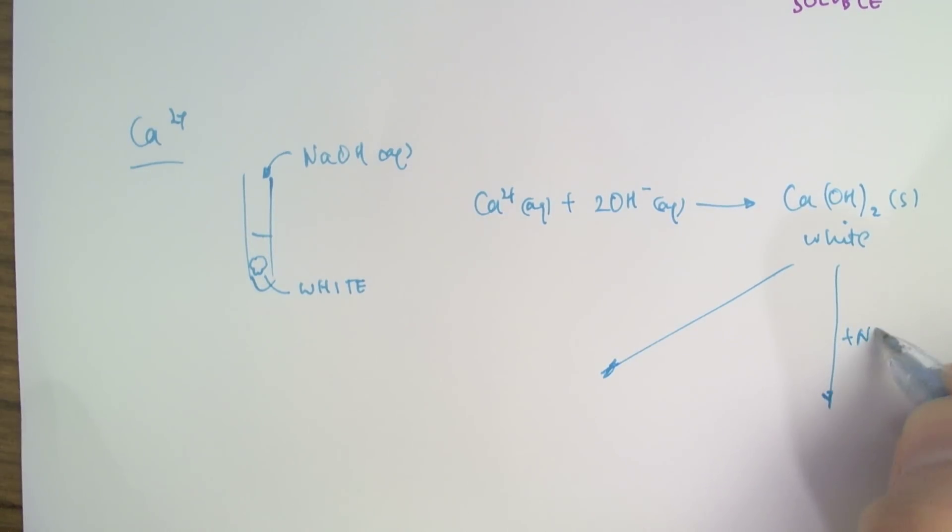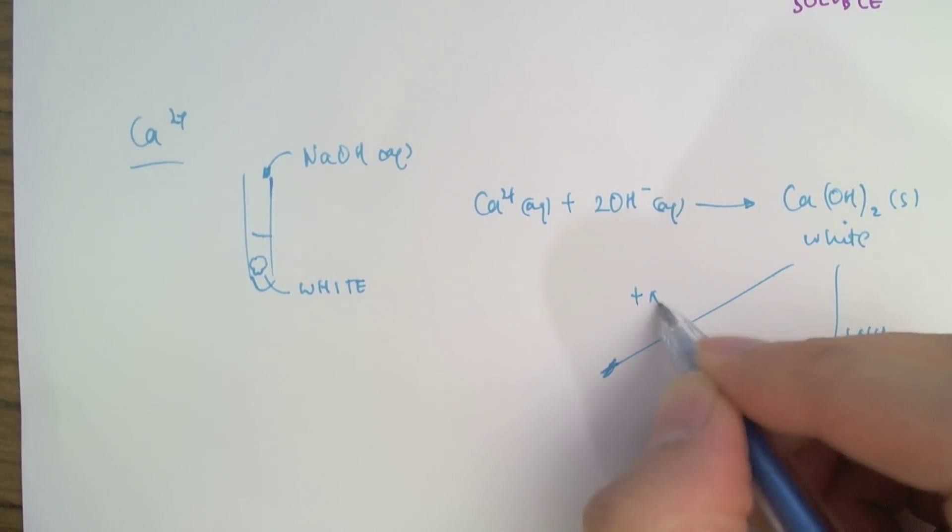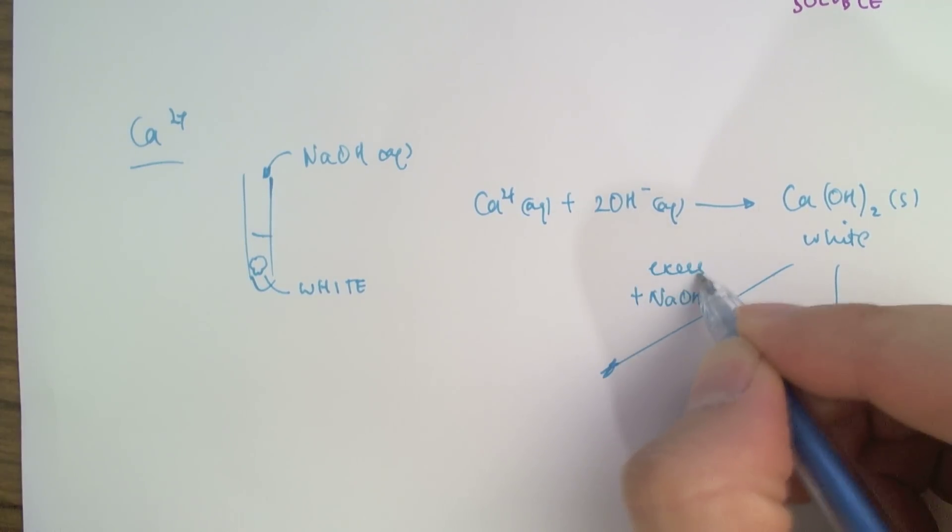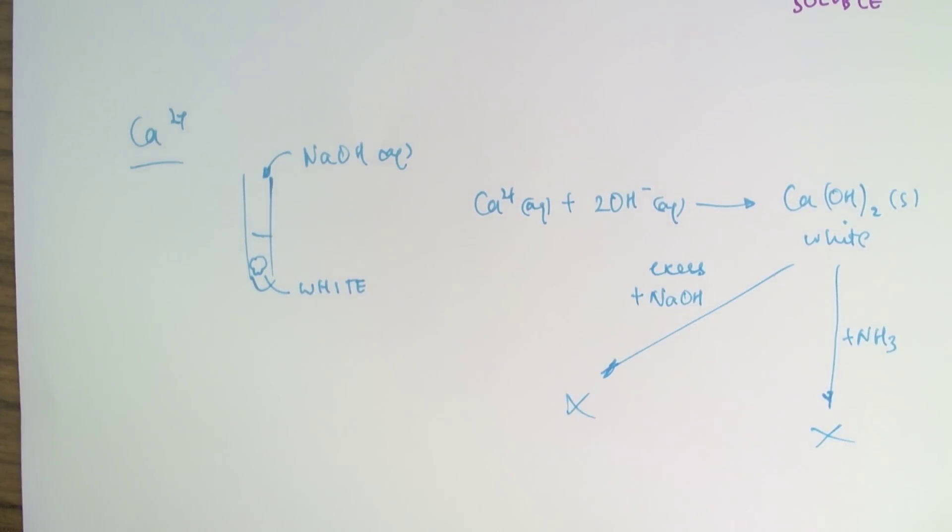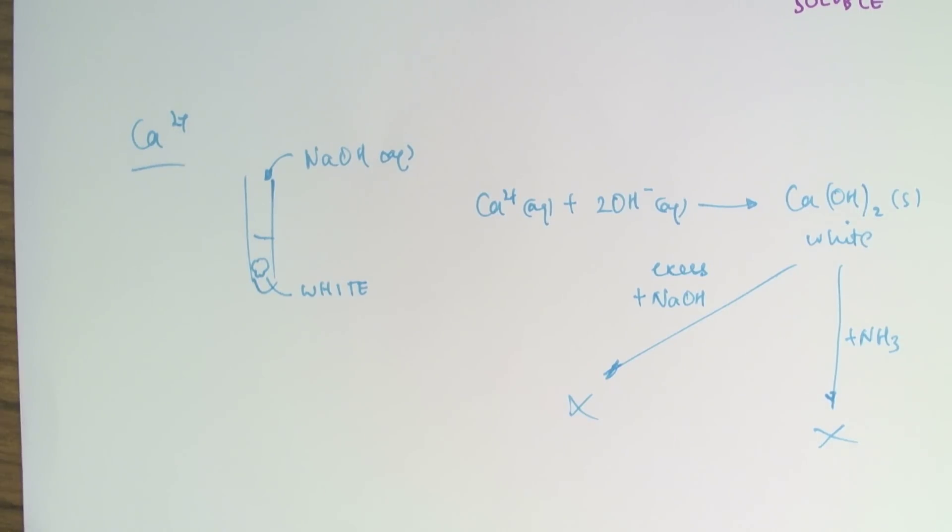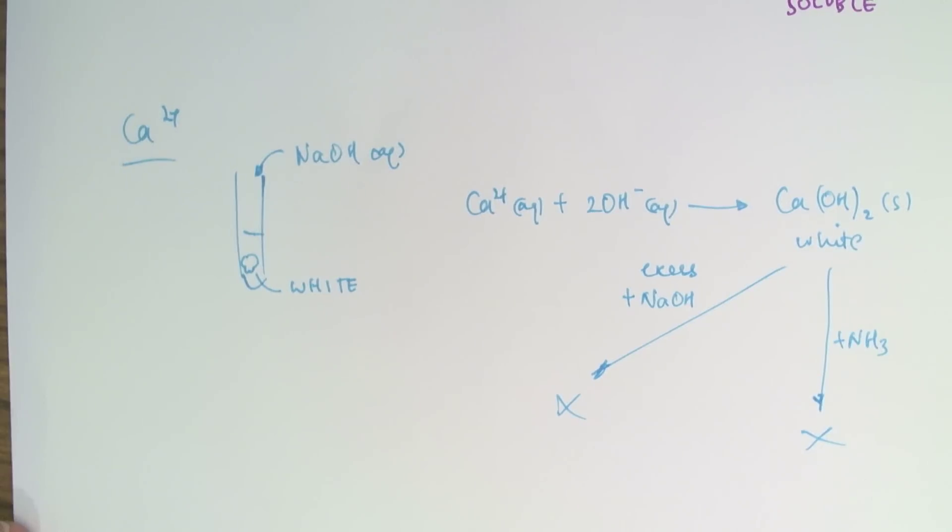And now, if we try to add ammonia or excess sodium hydroxide, what we see is no reaction, meaning the white precipitate remains even in the presence of excess sodium hydroxide or ammonia. So this is the distinguishing feature of calcium ions. The calcium hydroxide that's formed in the presence of sodium hydroxide will not dissolve in excess sodium hydroxide or ammonia. So that concludes our reactions for the seven cations that I wanted to look at.